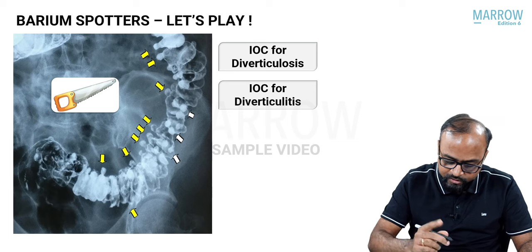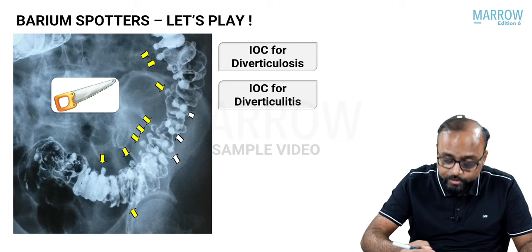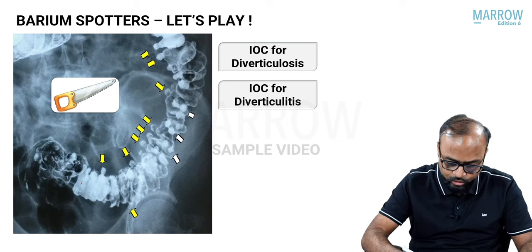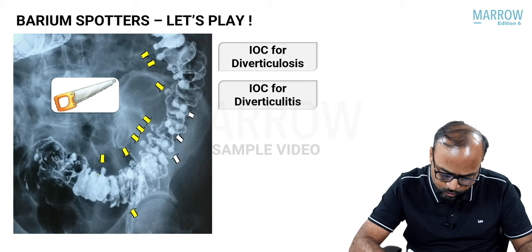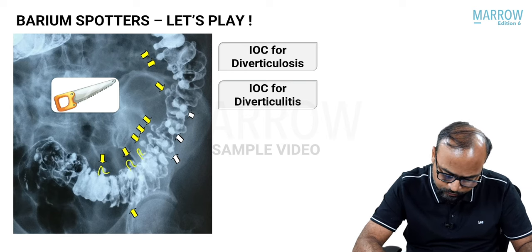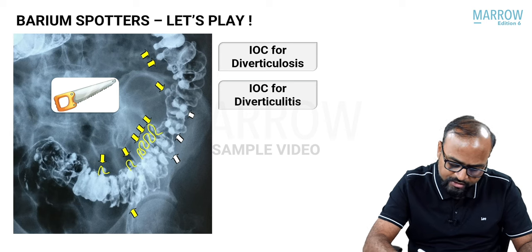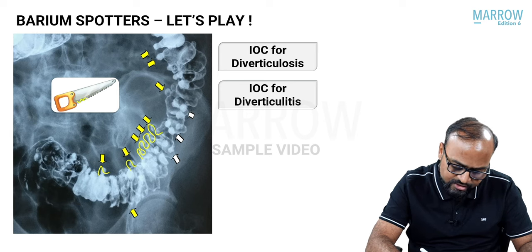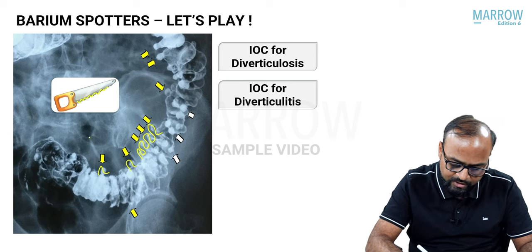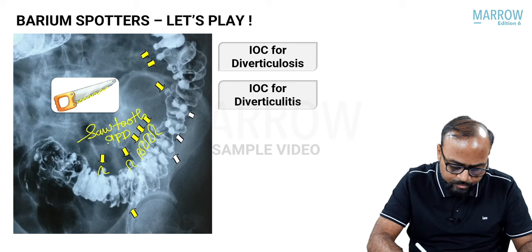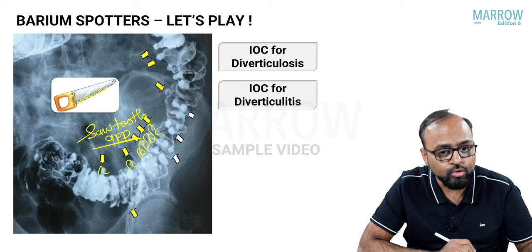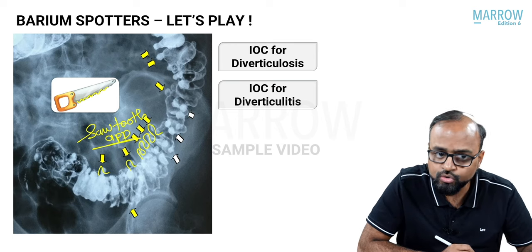This barium enema image shows diverticulosis. There are multiple outpouchings coming from the colonic lumen that look like the teeth of a saw — this appearance is called the saw tooth appearance or saw tooth sign.